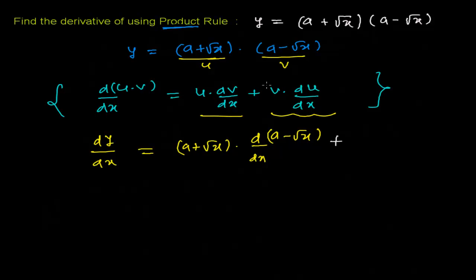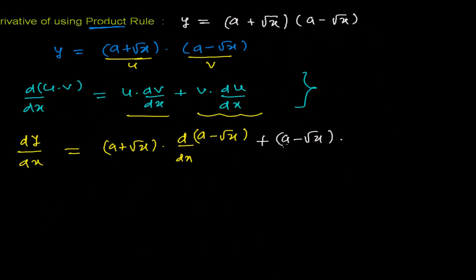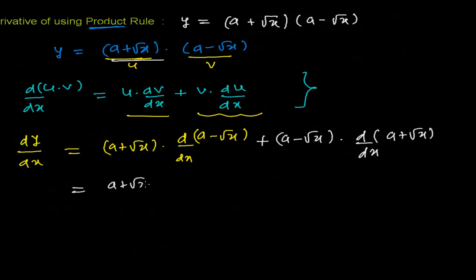Now I have to write the second part. I write the second function (a − √x) times the derivative of the first function (a + √x). Now here we're going to get: as written, (a + √x) times — the derivative of the constant term a is zero, and now the derivative of √x...